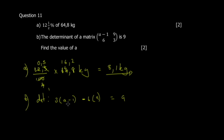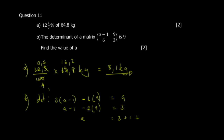You have 3a minus 1 minus 2 equals 9. Divide throughout by 3: you get a minus 1 minus 2/3 equals 3. So a equals 3 plus 1 plus 1 — this is the shorter method — giving a equals... working through it you get 22.